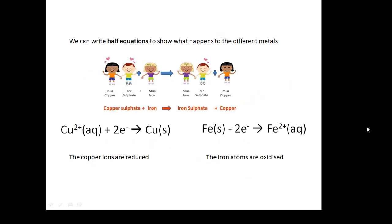What we can do for these metal atoms and ions is write something called a half equation. This shows what happens in terms of electrons, but just to the atom or the ion. Cu²⁺ plus two electrons becomes copper - the copper ions are reduced. Fe minus two electrons becomes Fe²⁺ - the iron atoms are oxidised. These are called half equations and you need to be able to do these. Hopefully your teacher will give you a worksheet and you'll have plenty of practice.